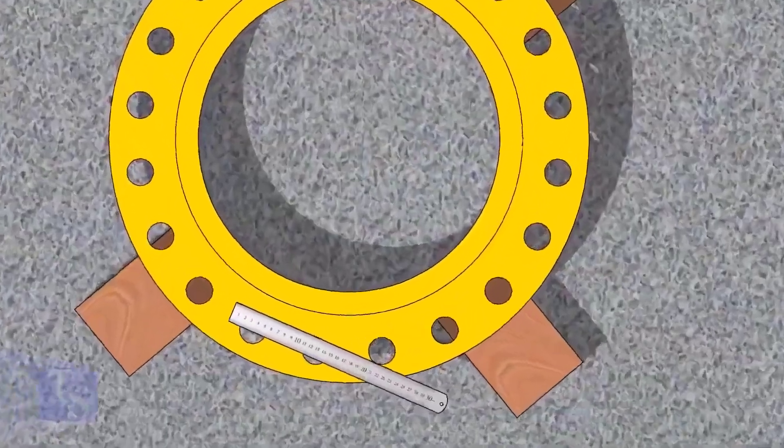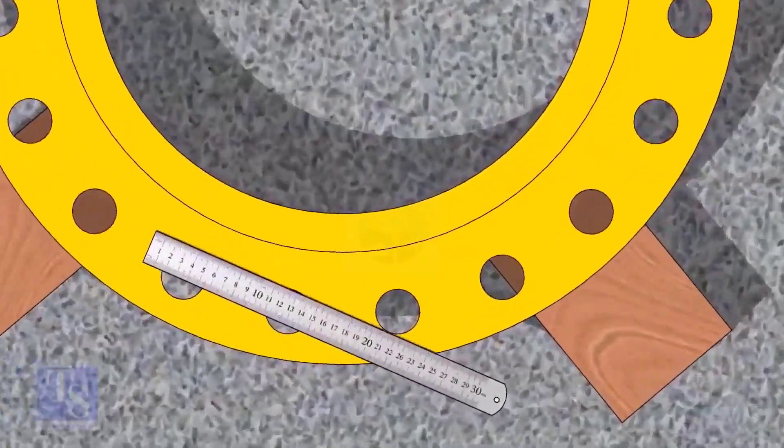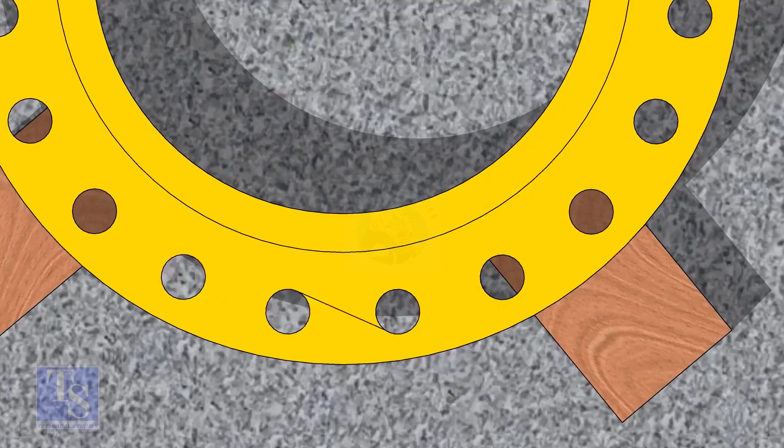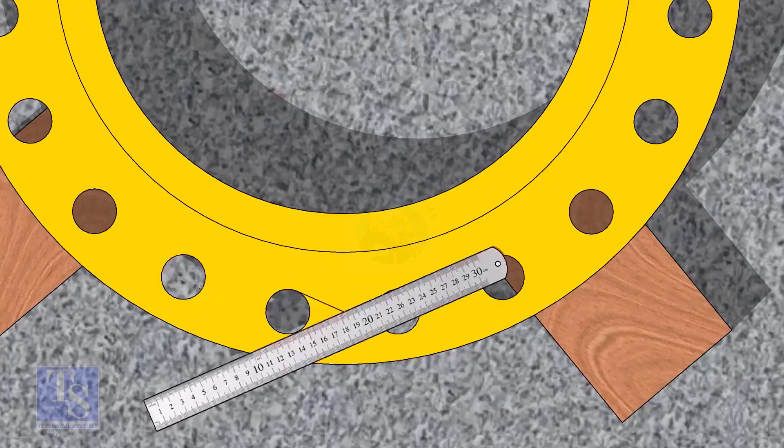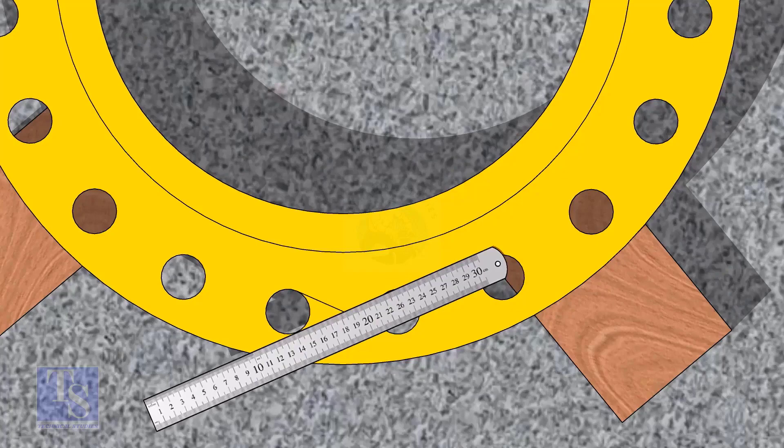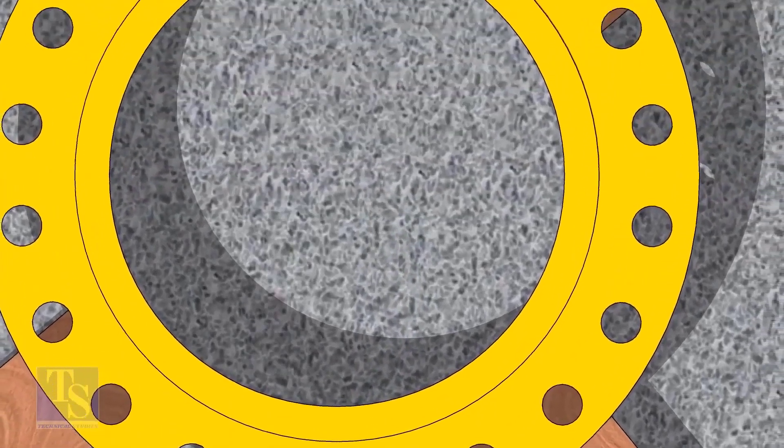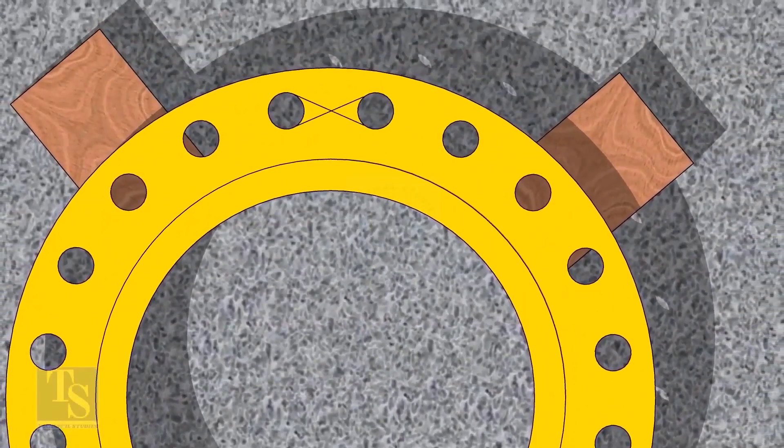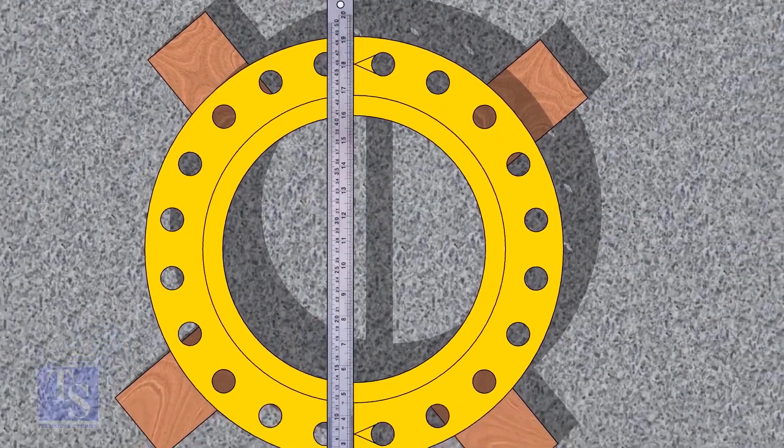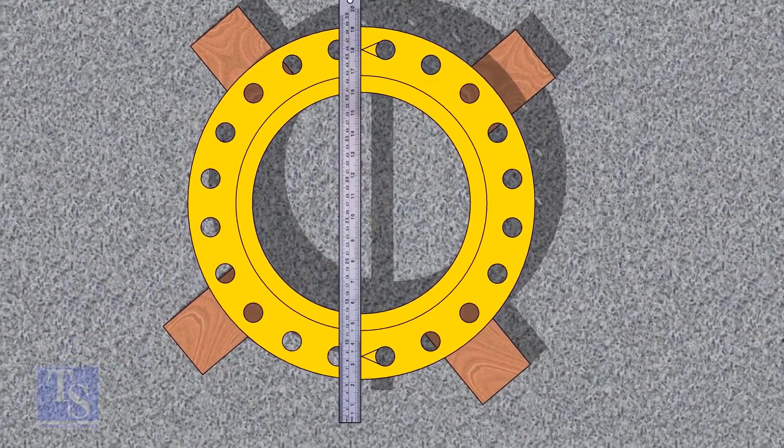Let us mark the center line of the flange. Draw tangential lines of two adjacent holes. The intersection of the lines is the center of these holes. Draw the center of the two holes on the opposite side. Draw the center line of the flange as shown.